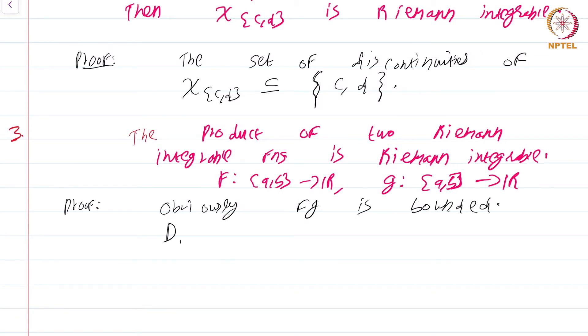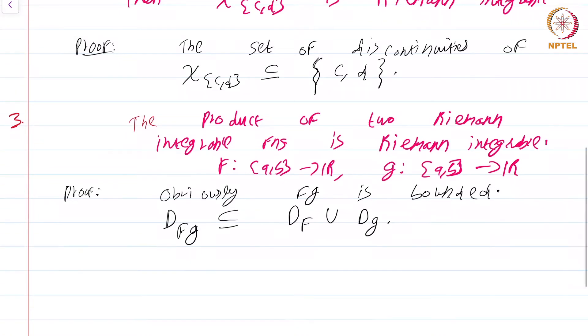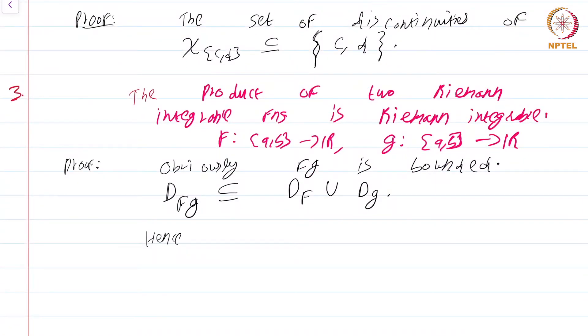Now the discontinuity set D_{fg}, the set of points where the product fg is discontinuous, is of course going to be a subset of the set of discontinuities of f, D_f, union the set of discontinuities of g. Note I do not write equal to, I just write subset. Think why that this will just be a subset.